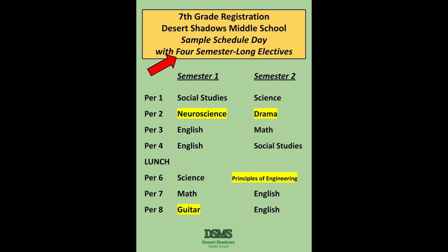Finally, this 7th grade schedule shows four core classes — English, math, science, and social studies — lunch, and four semester-long electives: a semester of neuroscience, a semester of drama, a semester of guitar, and one semester of engineering.